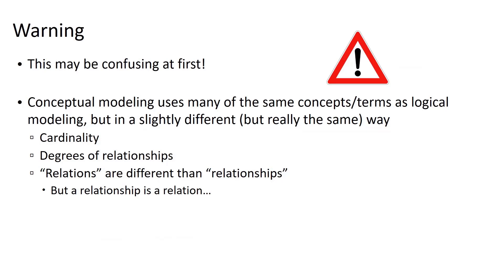This might be a little confusing at first because we use a lot of the same concepts and terms, but in a slightly different way. We've already talked about cardinality, and we're going to talk about it in a different way. We talked about degrees of relationships being the number of entities participating in a relationship, but now we'll talk about the degree of a relation — it means something different, but we'll come to find it really means the same thing. Relations are different than relationships, but a relationship is a relation — it's a little fuzzy, but we'll get there.